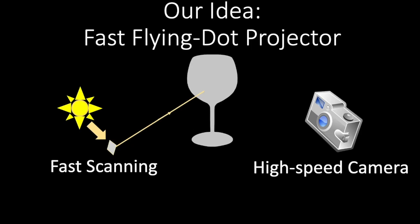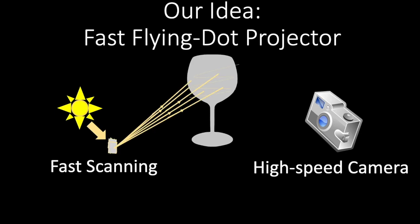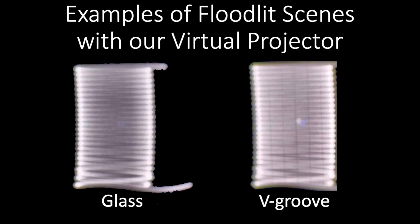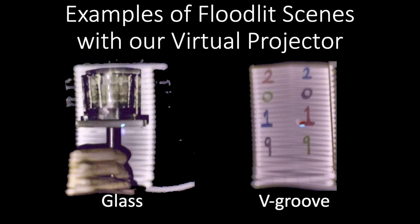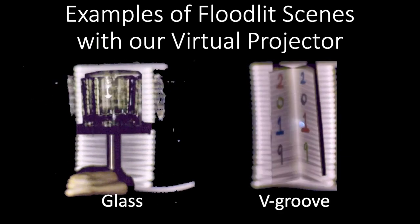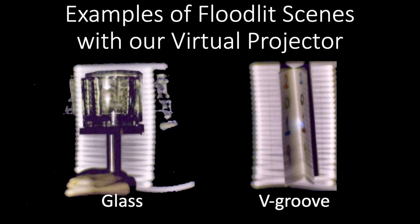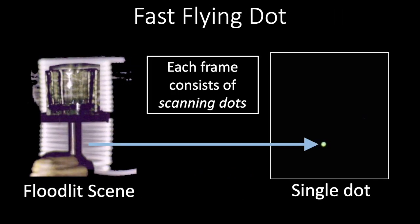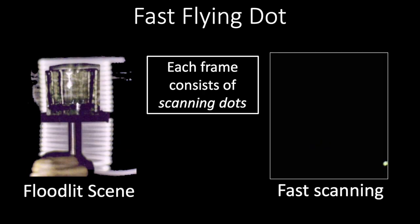The MEMS mirror allows for fast scanning of a single light dot over the scene. One application is to integrate all these dot images together to render a virtual floodlit projection of the scene. Here we show two scenes floodlit with our virtual projector. Each image captured by our system consists of many flying dots obtained by fast MEMS scanning, allowing for fast capture of the light transport matrix at video rates.